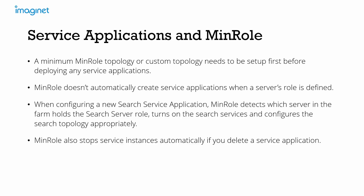Regarding service applications in MinRole: a minimum topology or custom topology is required first before deploying any service applications. MinRole doesn't automatically create service applications for you. For example, when you configure a new search service application, MinRole will detect which server in the farm holds the search server role, turn on the search services, and configure the search topology for you. MinRole will also automatically stop service instances if you delete a service application.